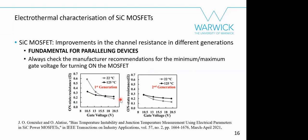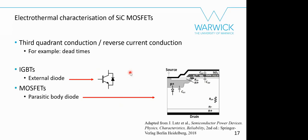Manufacturers have been improving channel resistance across generations. This is fundamental for paralleling: you want the hotter device to conduct less current. Always check manufacturer recommendations for minimum and maximum gate voltage for turning on the MOSFET. Comparing first and second generation: the second generation at 13–18 V already operates in a positive temperature coefficient region, whereas the first generation at 13 V showed negative temperature coefficient — not good.